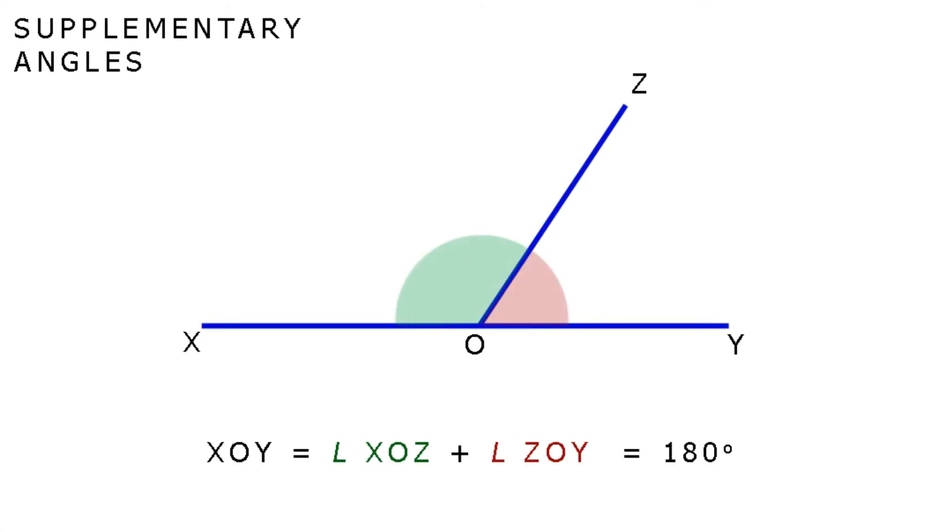On the other hand, supplementary angles, which are also adjacent angles, these guys add up to 180 degrees. A straight line. In our diagram, if XOY is a straight line, then we say that angle XOZ and angle ZOY are supplementary to each other. Together, they add up to 180 degrees. XOY equals angle XOZ plus angle ZOY, which equals 180 degrees.